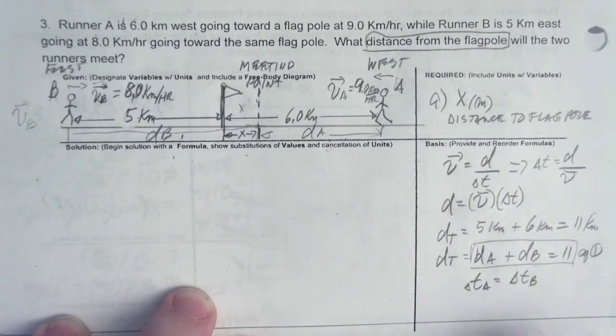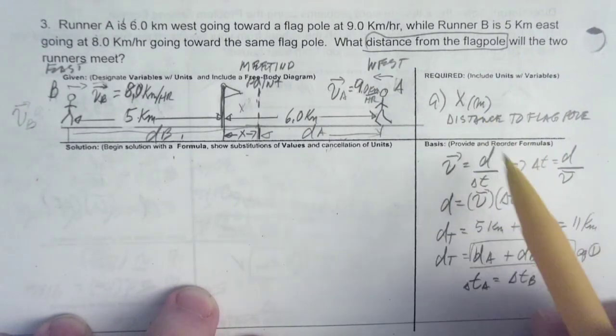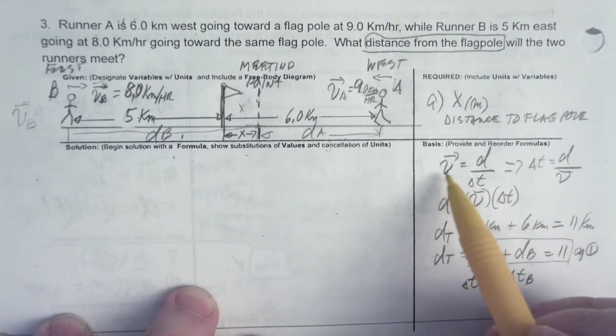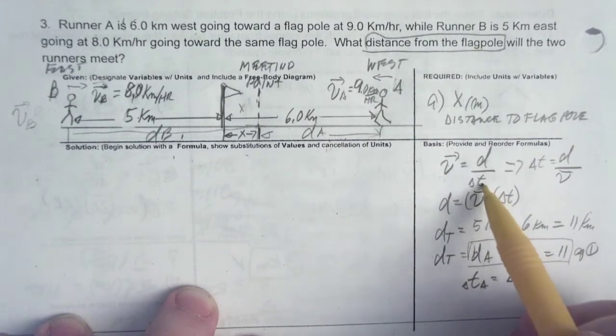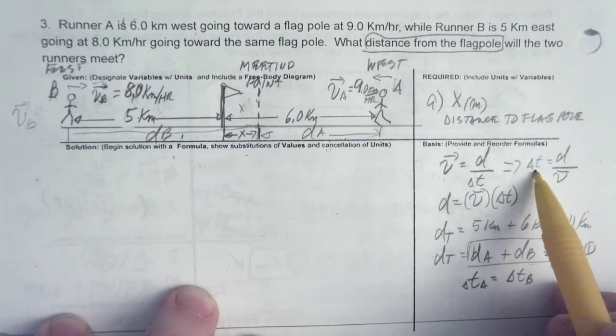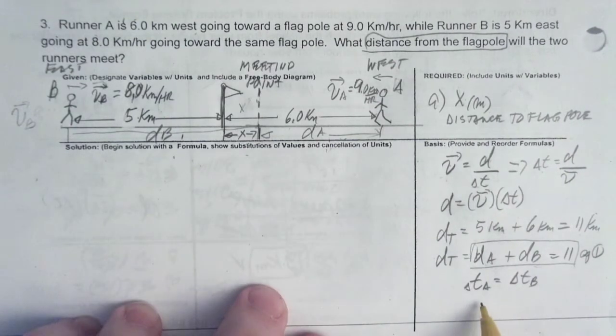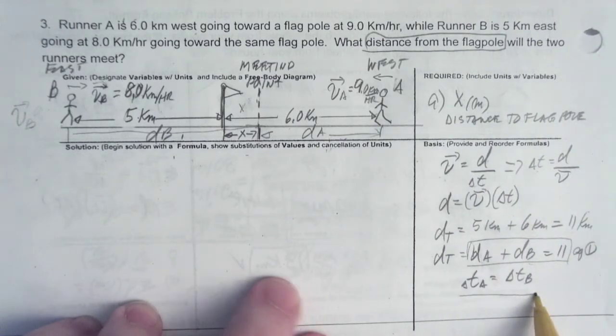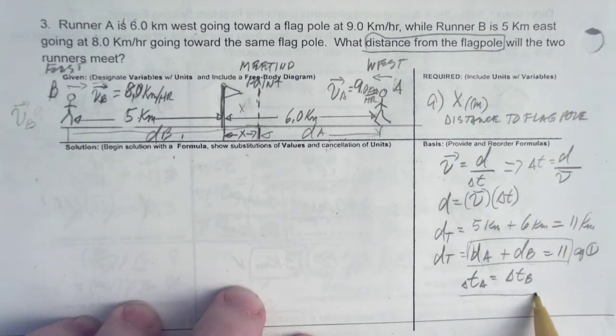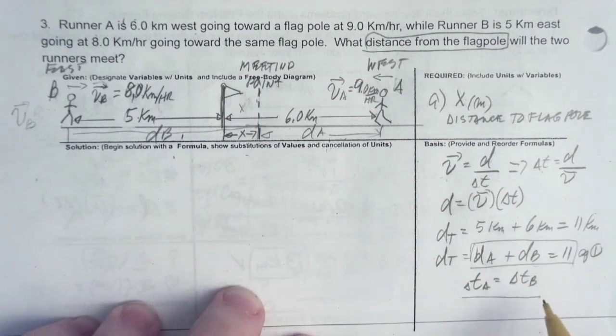So, here's the other thing that we have to do. We have to find out our formulas. We have one formula, which is velocity is equal to distance over the time elapsed. And the time elapsed is equal to distance over velocity. So, the time for runner A and for B is the same because they start running at the same time, towards the same flagpole.